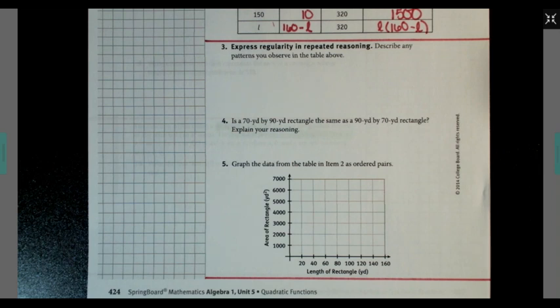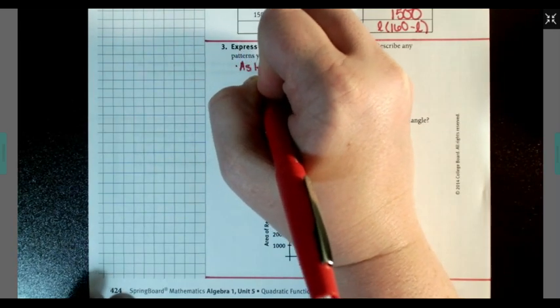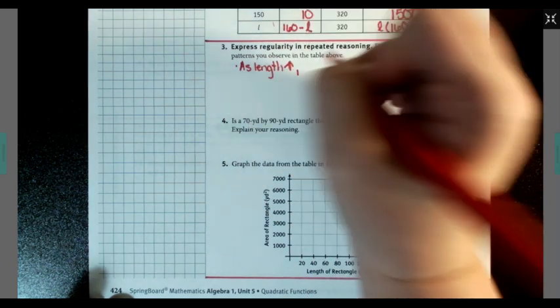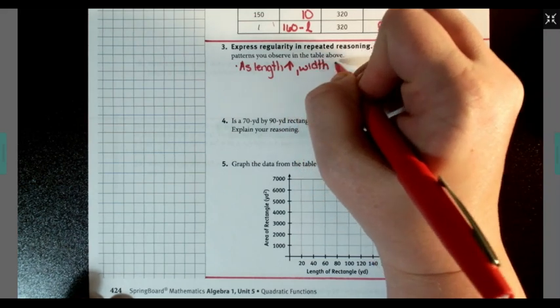Section 2, which covers questions 3 through 5, starts off by saying describe any patterns you observe in the table below. Well, I know as the length increases, what happened to my width? That width decreased.